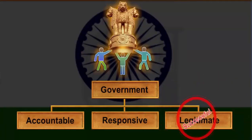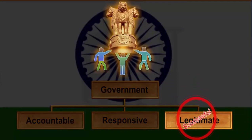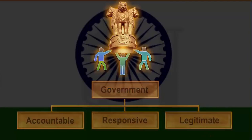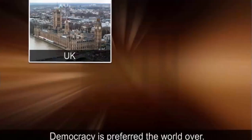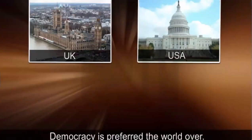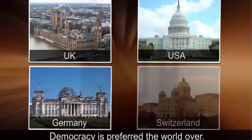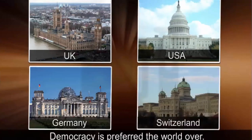Democracies have been successful on the third factor, legitimacy. Although a democratic government may be slow, less efficient and not always clean, it is a legitimate government because it is the people's own government. Democracy is the most preferred form of government, based on its political outcome of accountability, responsiveness and legitimacy.